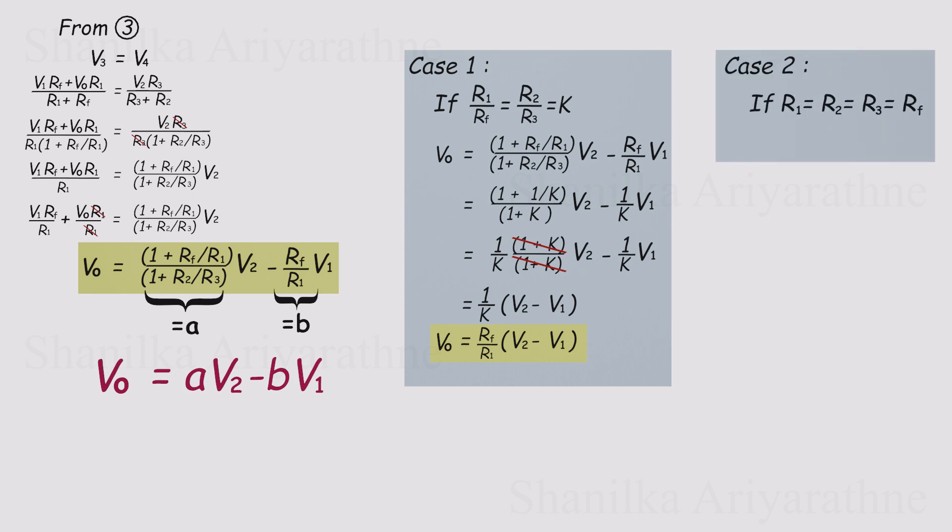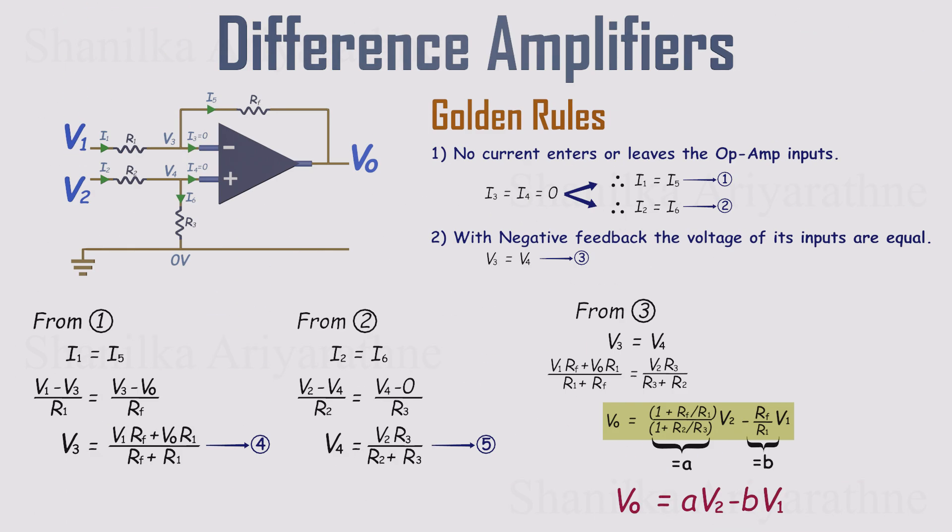Second case, what if all the resistors are the same value? Then K equals 1 and the whole thing simplifies beautifully. The output is just the clean difference between the two inputs. Pretty neat, right? So that's the tour of difference amplifiers, also called subtractors. Keep practicing the derivations, not just the results. Do that a few times and you'll feel like a pro.